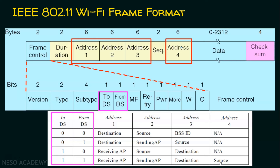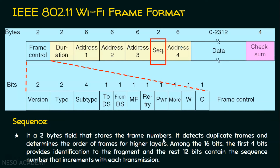The sequence field is a 2-byte field that stores the frame numbers. Sequence numbers help detect duplicate frames and determine the order of frames for upper layers. Among the 16 bits, the first 4 bits provide identification to the fragment, and the remaining 12 bits contain the sequence number that increments for each transmission.